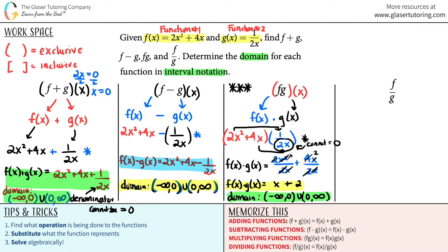Last but not least, division. F divided by g of x, which is the same as f of x divided by g of x. So I'm just going to put it over here. F of x was the 2x squared plus 4x. And I will be dividing that all by g of x, which is 1 divided by 2x. I'm going to put a star here. And now let's see if I can simplify anything. Dividing by a fraction is just multiplying by the reciprocal. So f of x times g of x equals 2x squared plus 4x times 2x over 1.